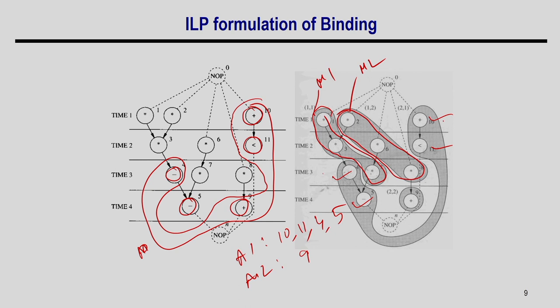Many valid mappings exist as long as they satisfy the compatibility and conflict constraints. However, mapping 4 operations to one FU requires more multiplexers — 4 inputs must be multiplexed. In each timestamp you provide the appropriate inputs: ts1 for the first operation, ts2 for the second, ts3 for the third, ts4 for the fourth.